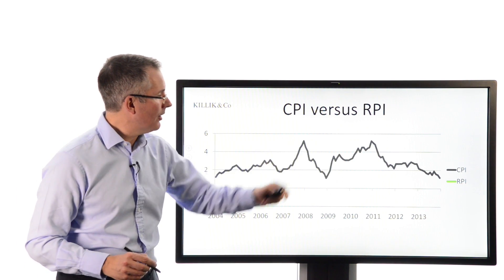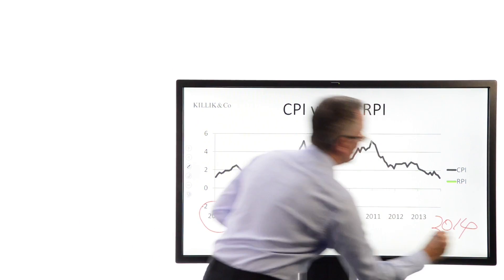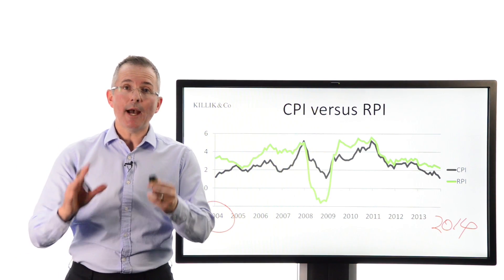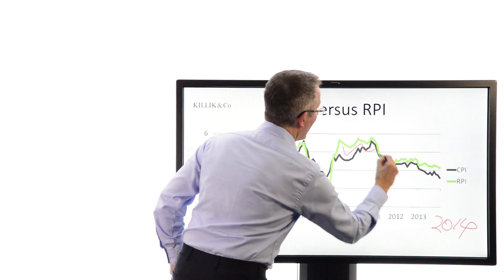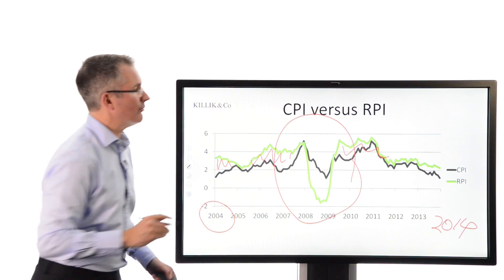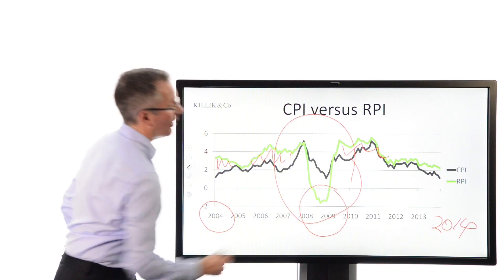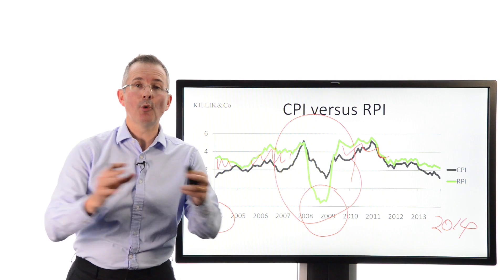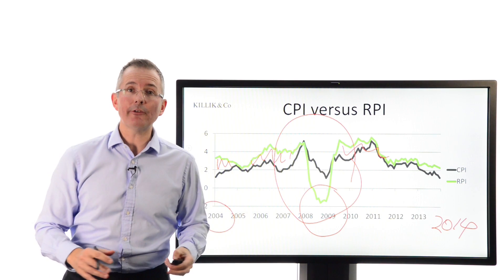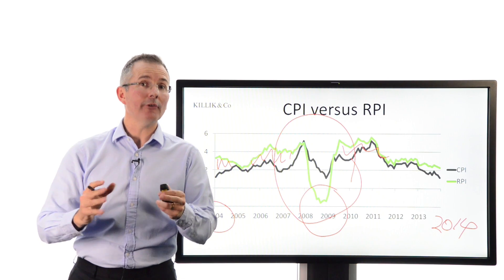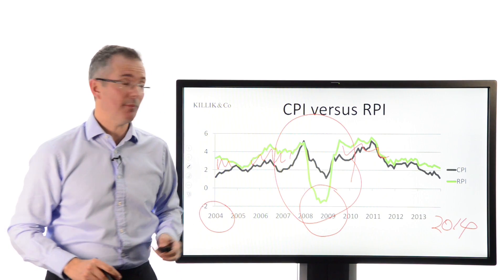Looking at the historical chart over the last 10 years — 2004 to 2014 — the CPI number is generally below the RPI number, with one quite big exception. Rules are there to be broken. There was a big dive in the RPI around the time of the credit crunch, because the RPI includes mortgage interest payments — those fell off a cliff when the Bank of England slashed rates in response to the credit crisis. So there was a period when the RPI was tracking below the CPI. But normally, when you look it up, the CPI is below the RPI.